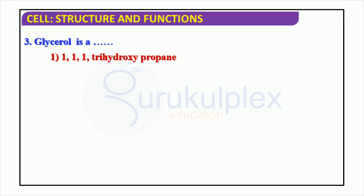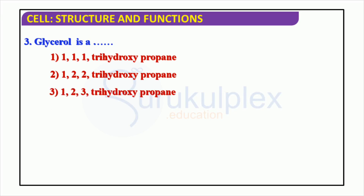Glycerol is an important component of living cells, found in many substances like fats, oils, and waxes. It is a three-carbon alcohol molecule with three functional groups, each with a hydroxyl group on its respective carbon. Glycerol can be classified as 1,1,1-trihydroxypropane; 1,2,2-trihydroxypropane; 1,2,3-trihydroxypropane; or 1,1,2-trihydroxypropane. Each of these structures is of significant importance to the chemistries of living systems.